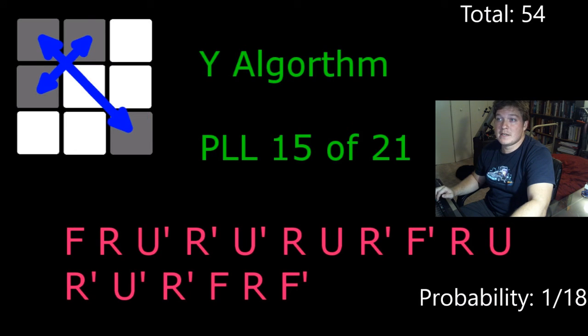The Y algorithm, again, four ways it can happen. So we end up with 54 cases.